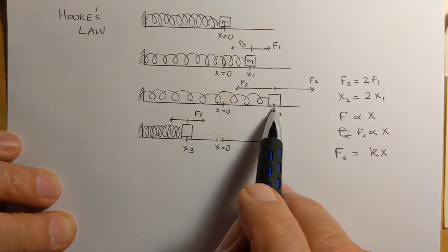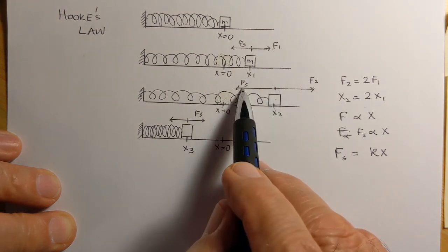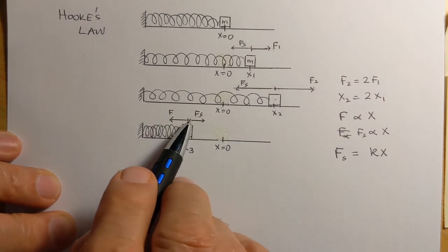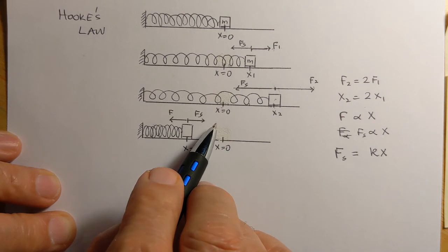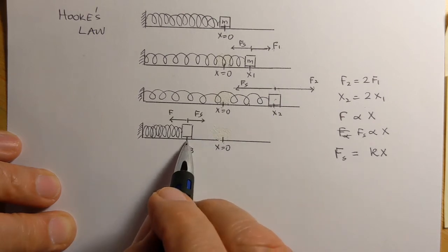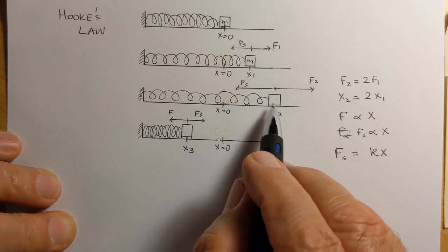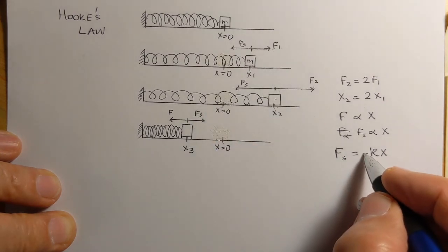We also see that when x is positive the pull is to the left, and if we had pushed it in, so we applied a force to the left, the spring will push to the right. When x is negative F_s is positive, when x is positive F_s is negative, and so we have a minus sign.